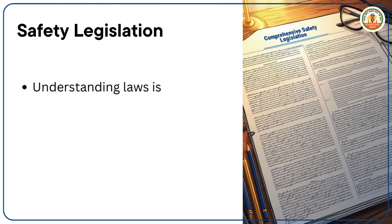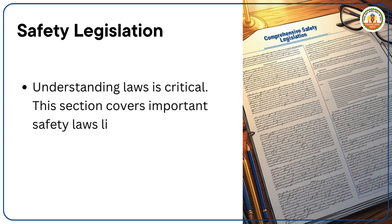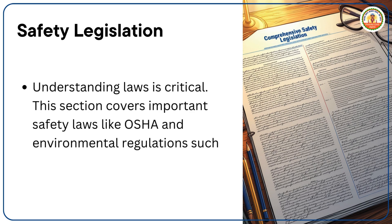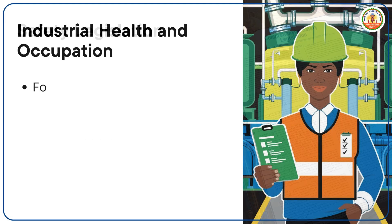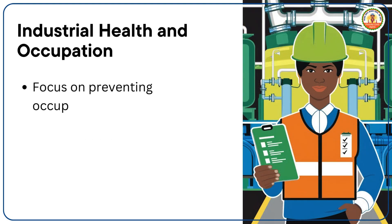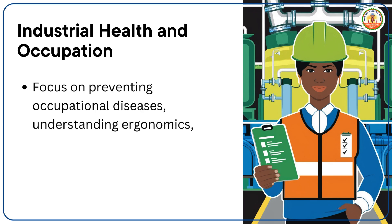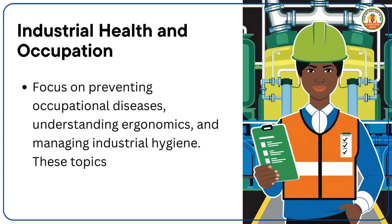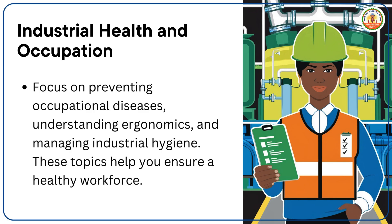Understanding laws is critical. The Safety Legislation section covers important safety laws like OSHA and environmental regulations such as the Air and Water Acts. The Industrial Health and Occupation module focuses on preventing occupational diseases, understanding ergonomics, and managing industrial hygiene to ensure a healthy workforce.